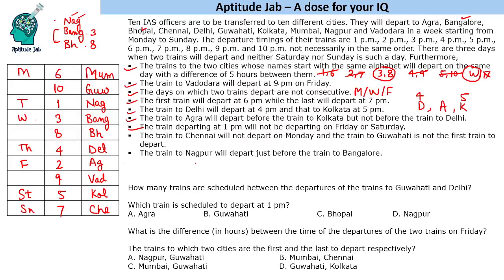This completes the schedule of the trains — their departure times and destinations. Answering the questions: How many trains are scheduled between the departures of the trains to Guwahati and Delhi? Three trains. Which train is scheduled to depart at 1 PM? The train to Nagpur. What is the difference between the departure times of the two trains on Friday? 2 PM and 9 PM — a difference of seven hours. Which cities have the first and last trains? First is Mumbai, last is Chennai.